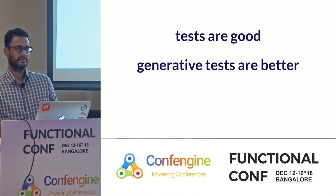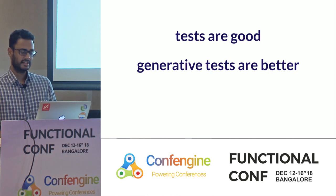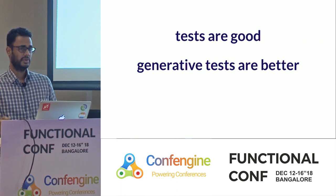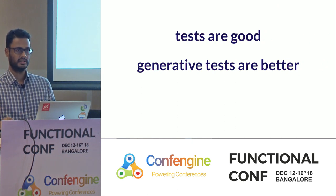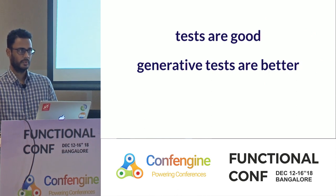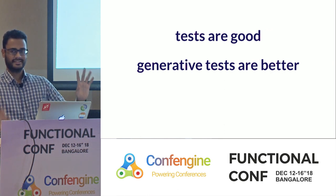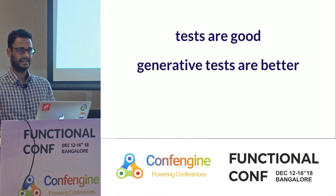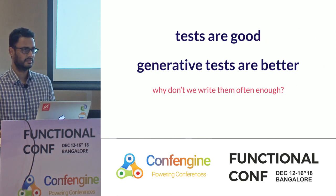The flip side of the QA engineer walks into a bar, orders one, orders minus one, orders infinity — is that machines are better at doing this. John Hughes made the case for this a long time ago. QuickCheck is in 30-odd languages now. I'm sure we are all familiar with that. Yet people don't write generative tests often enough.